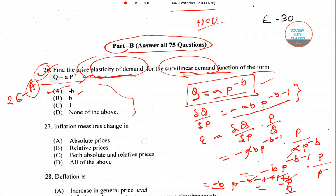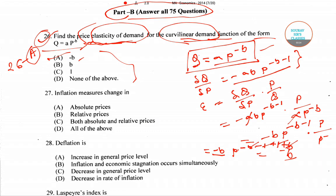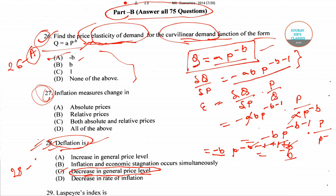Moving to question number 28: deflation is basically a decrease in the general price level. So the right answer for question number 28 is option C — deflation equals decrease in general price level.